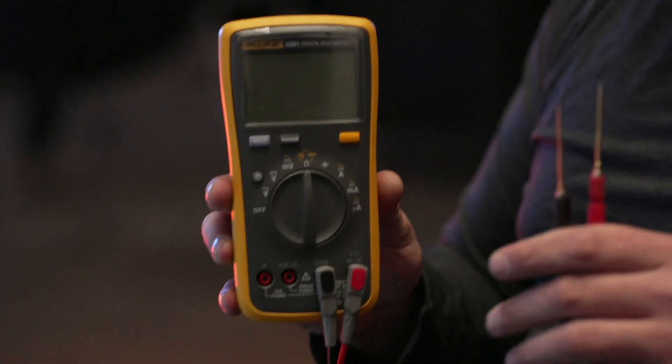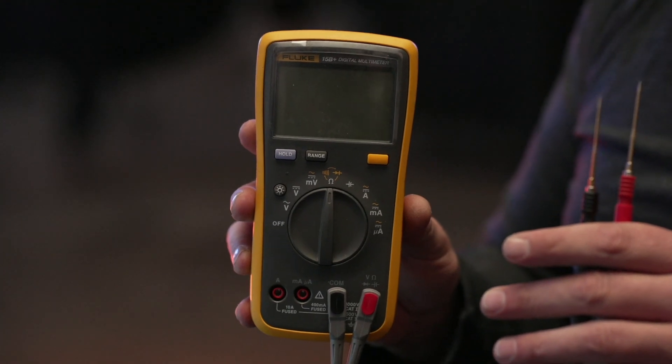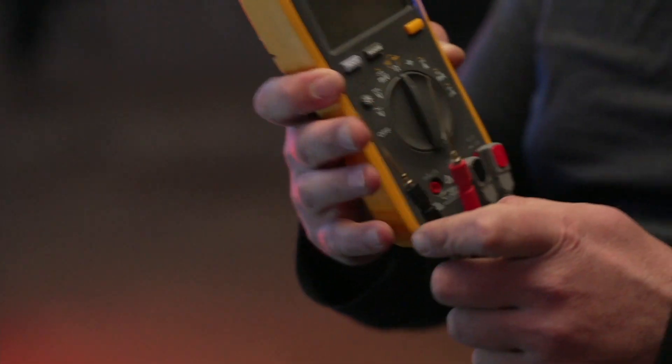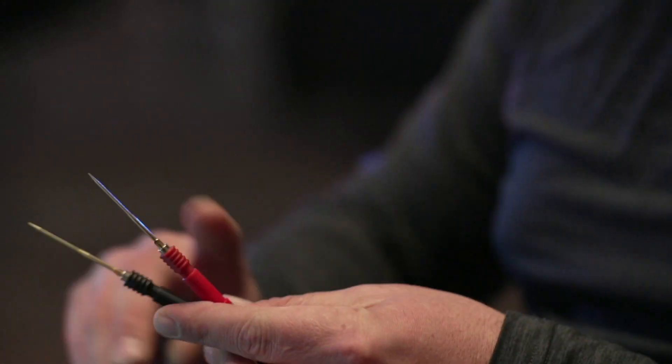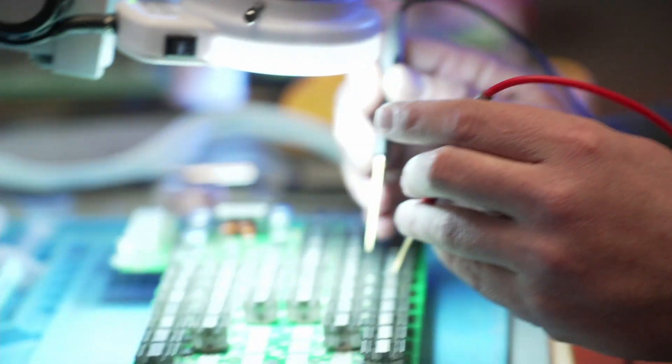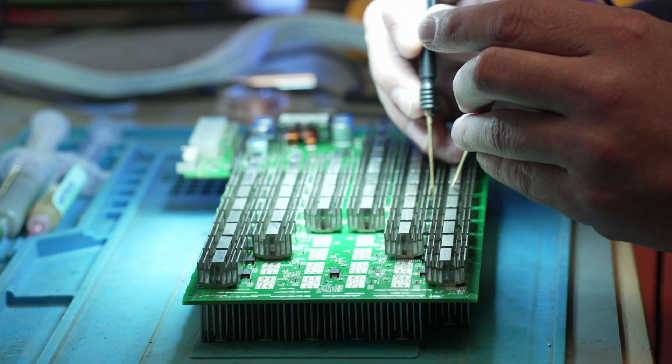Another thing you're going to need is a multimeter. Also having some needle tips will help substantially because you can actually, if you take a look, you can go in between the heat sinks with it.